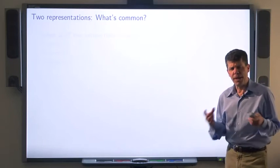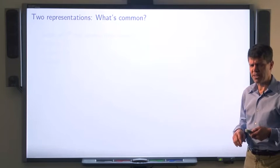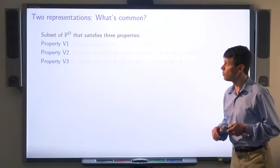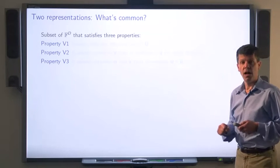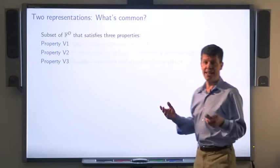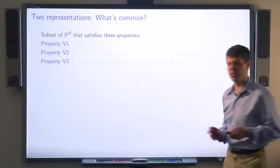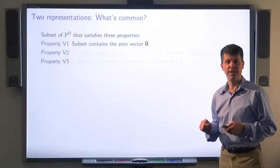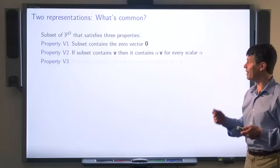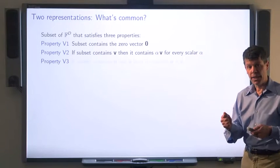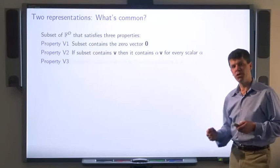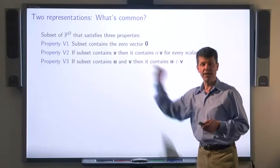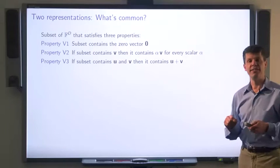What's common about these two representations for sets of vectors that form geometric objects? It's a subset of R^d satisfying three properties. First, the subset contains the zero vector. Second, if the subset contains some vector v, it contains every scalar multiple of that vector. Third, if the subset contains two vectors u and v, it also contains their sum.